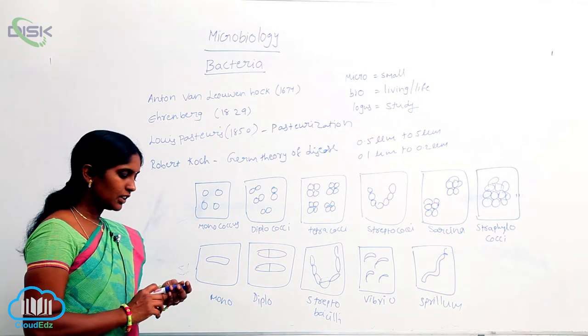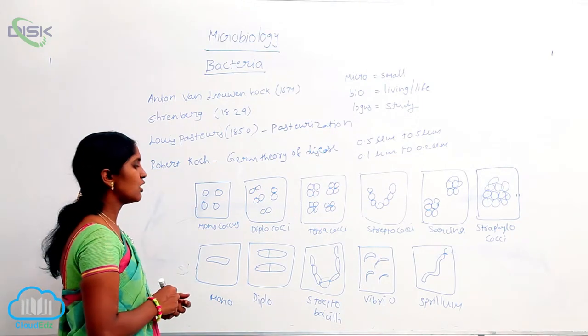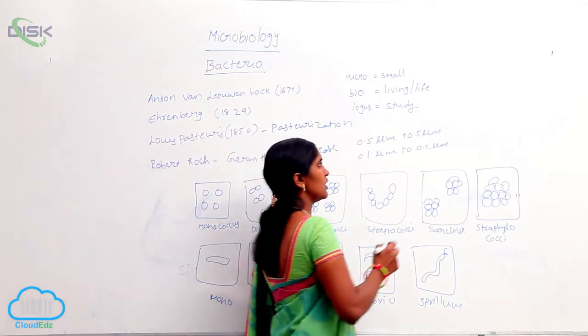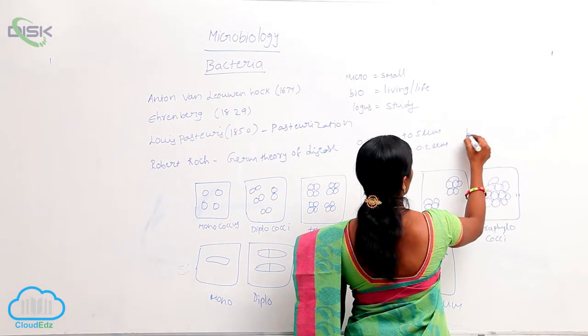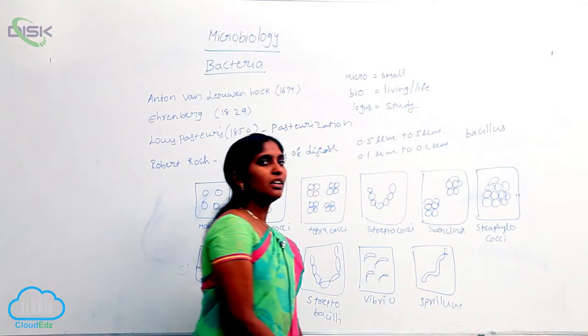Another shape of bacteria is rod-shaped. If it is rod-shaped, we simply call it bacillus - an elongated rod shape.